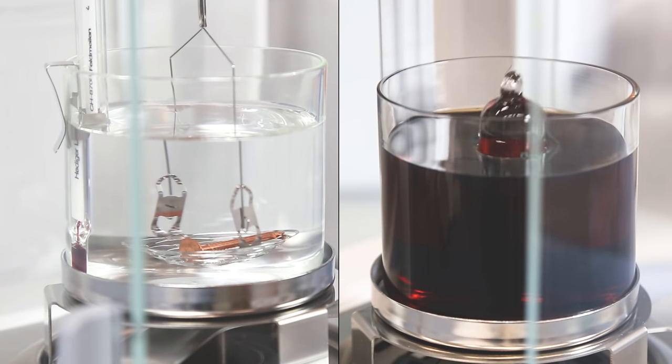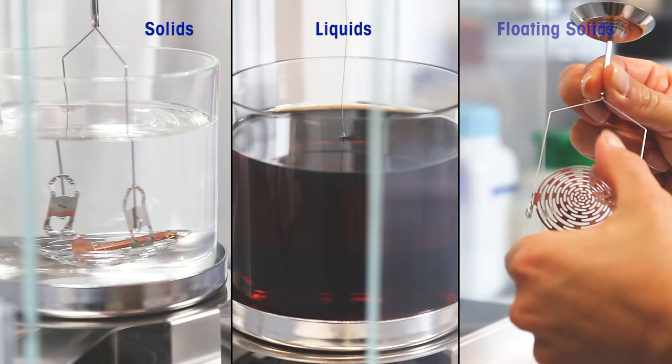By using a glass sinker of known volume, you can also determine the density of liquid samples.